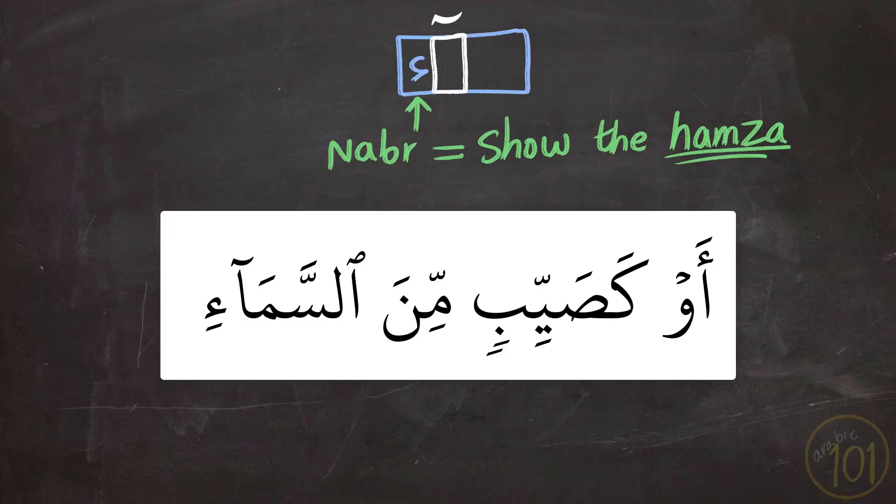Like in this example: اَوْ كَصَيِّبٍ مِّنَ السَّمَاءَ. If I don't apply stress, it is gonna sound like this: اَوْ كَصَيِّبٍ مِّنَ السَّمَاءَ. And here you have to be careful not to overdo it or exaggerate the stress at the end of the word because it might give the impression that there is a هَ coming after the Hamza when you do it too much. Like this: اَوْ كَصَيِّبٍ مِّنَ السَّمَاءَ.